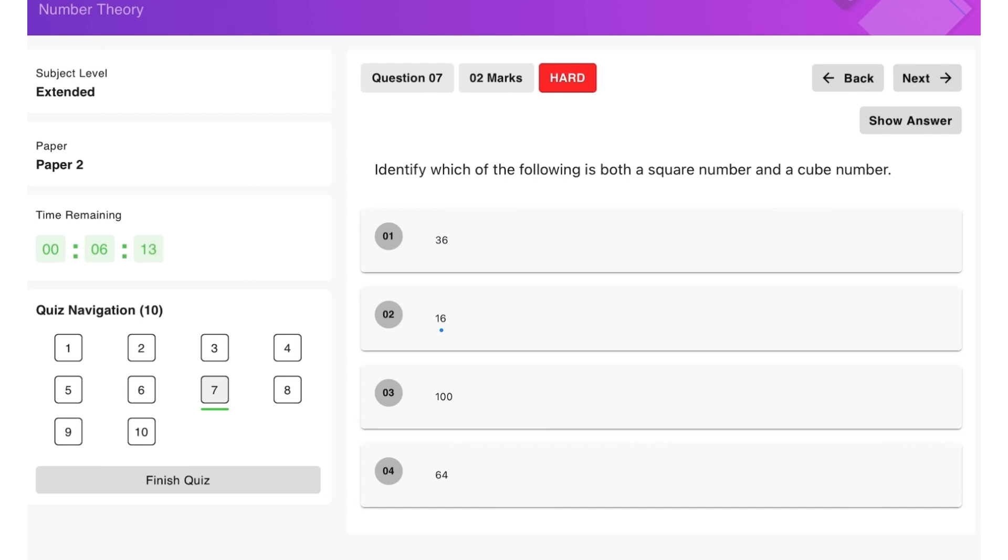Which of the following is both a square number and a cube number? Alrighty. So 36, we can write as 6 times 6. 16 can be written as 4 times 4. 100 can be written as 10 times 10. And 64 can be written as 8 times 8. So when we look at it, only 64 can also be written as 4 times 4 times 4. So therefore, 64 is the answer for this one.